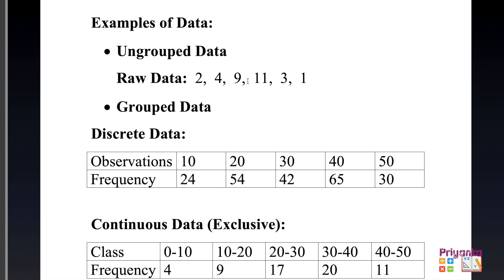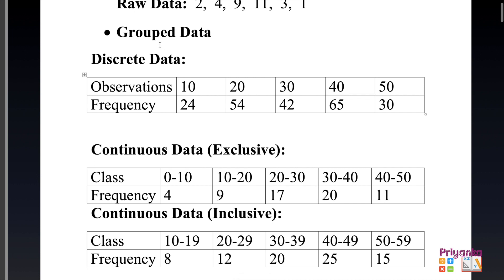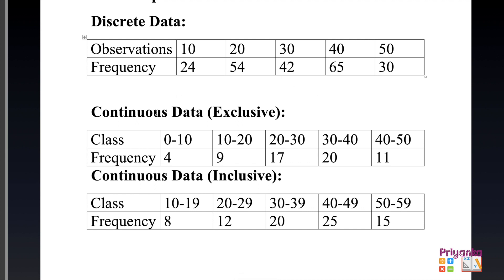Raw data will look something like this where only numbers are given. In grouped data, discrete data looks like observations given as single numbers with their related frequency. Continuous data will appear as class intervals — either exclusive or inclusive class.